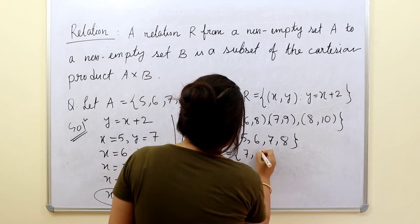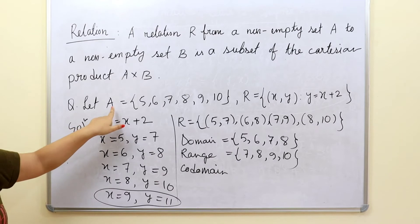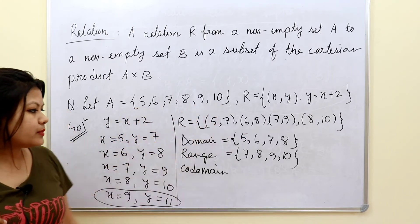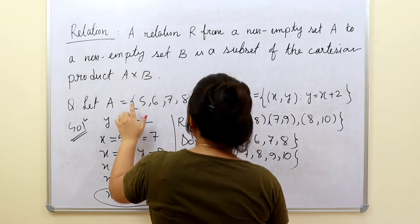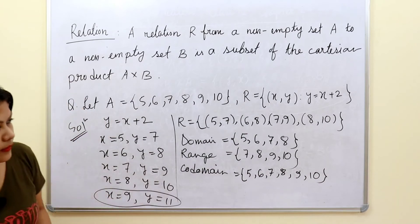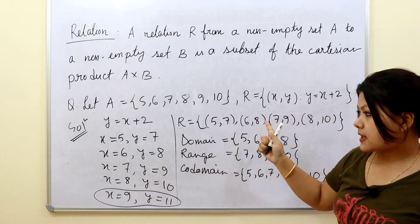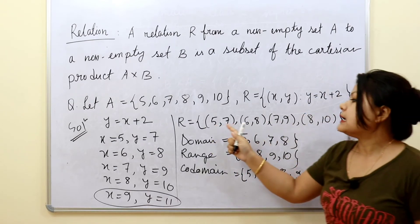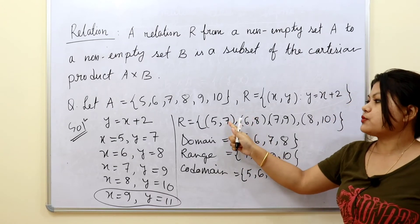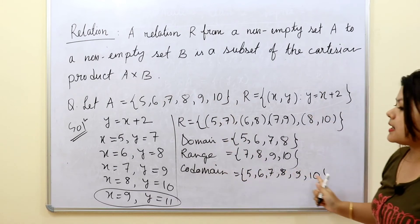Co-domain is the set of all second elements we can get from the Cartesian product A cross A — that is, all the values of set A form the co-domain. So whenever you are studying about relation, you should always be clear about what is domain, what is co-domain, and what is range. In this question, the first elements of the ordered pairs {5, 6, 7, 8} form the domain, second elements {7, 8, 9, 10} form the range, and all the values of set A form the co-domain.